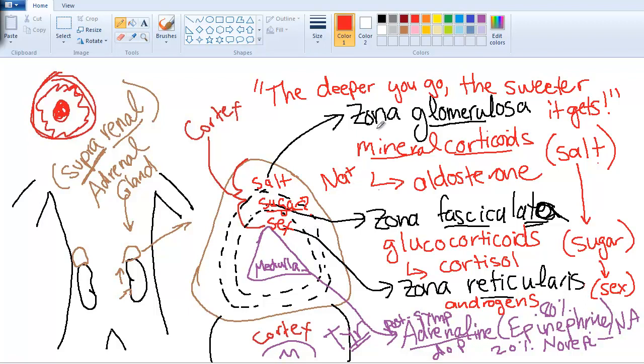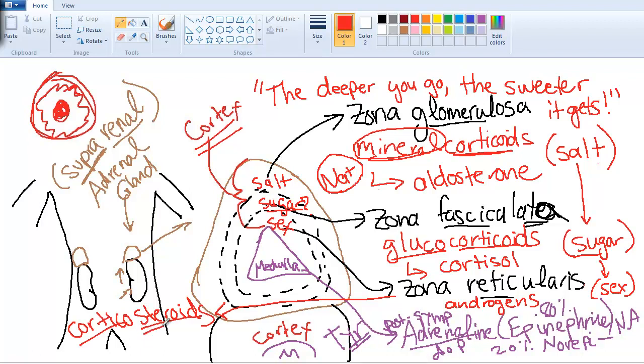Let's recap. Zona glomerulosa: mineralocorticoid. Why mineral? Because sodium is a mineral being regulated. Gluco is easy to remember because it's sugar, just like glucose. Androgens. You have the word corticoids referring to the cortex. But why doesn't this one have it? There's another name: corticosteroids, which is the same thing. The androgens are steroids derived from cholesterol, and there it is, sterol from cholesterol.